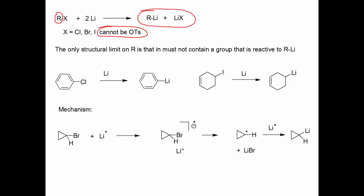So chlorobenzene would react with lithium to make phenyllithium. This alkyl iodide here would react with lithium to make the compound where iodine is replaced by lithium — iodine gets replaced by the carbon-lithium bond.